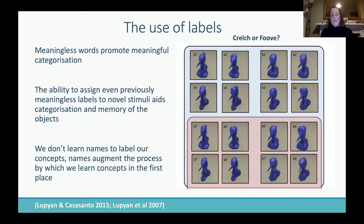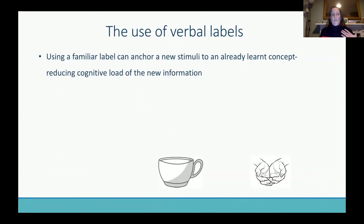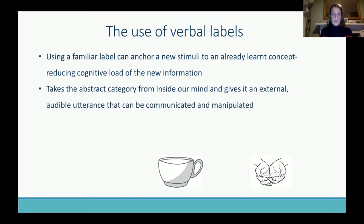And that's key to what we're arguing. To emphasize this label point again: if you can use a familiar label, this will anchor the new stimulus to your already-learned concept, and this could help reduce the cognitive load of the new information, particularly in the context of ordered sequences. Aside from this, if you give something a verbal label, it takes this abstract category from inside your head and gives it an external, audible utterance that can be communicated to other people.